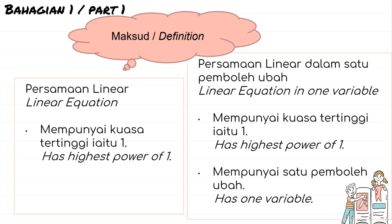Let's see the definition of linear equation. Do you understand what 'equation' means? An equation is when you have the symbol 'equals to'. How about 'linear'? Linear means it has the highest power of 1. For example, 3x means 3x to the power of 1, and 2x to the power of 1 also equals to 2x. X is the variable.